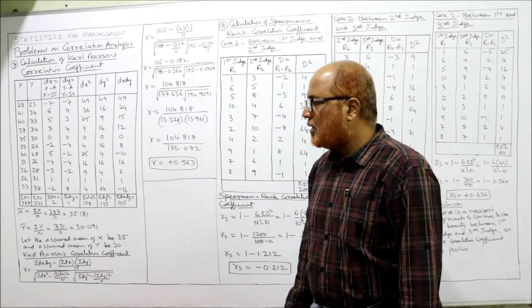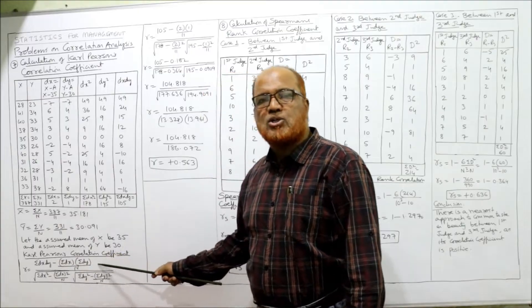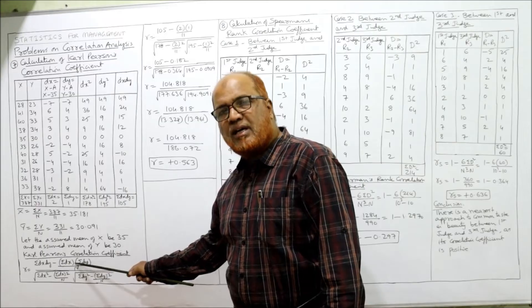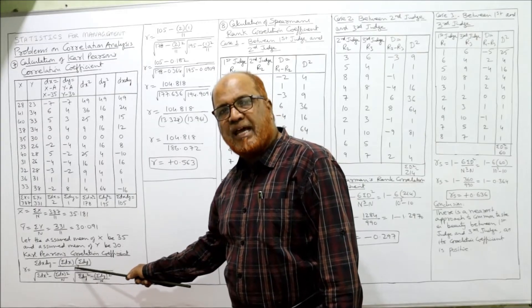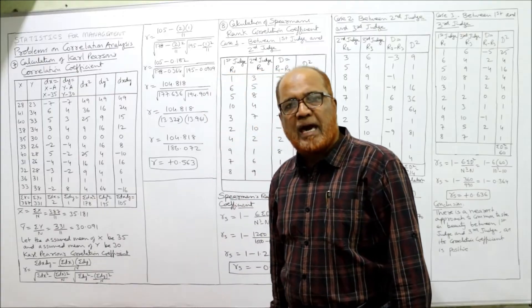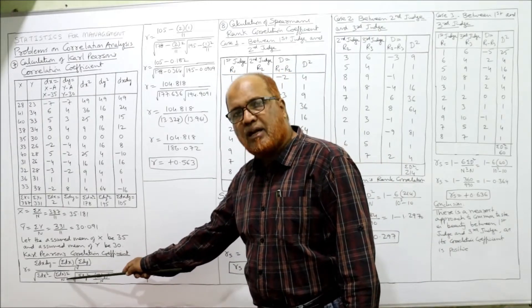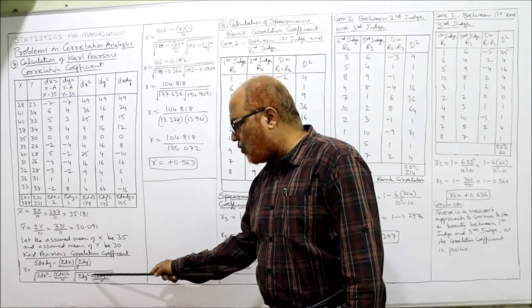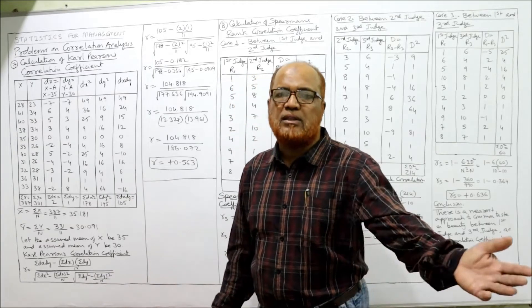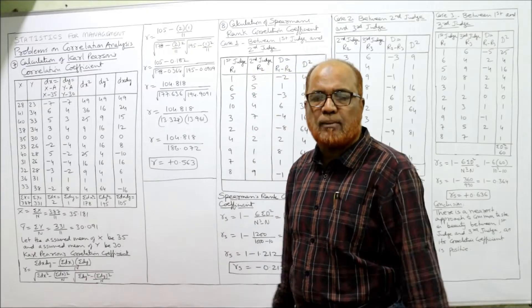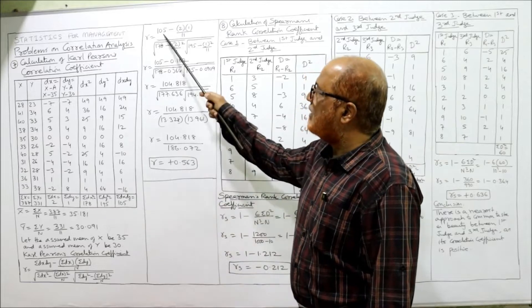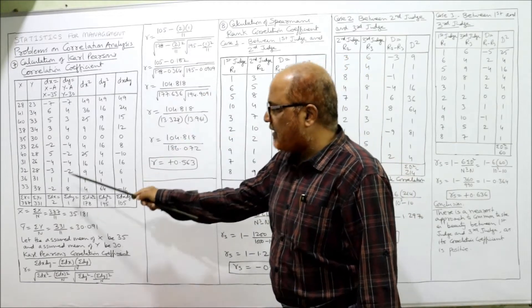Now recall the formula. Carl Pearson's correlation coefficient r equals: [summation dx·dy − (summation dx × summation dy)/n] divided by the square root of [summation dx² − (summation dx)²/n] multiplied by the square root of [summation dy² − (summation dy)²/n]. This is the same formula applied in the previous videos — no change at all. Substitute: summation dx·dy = 105, summation dx = 2, summation dy = 1, n = 11.